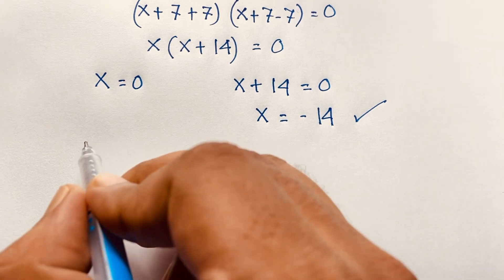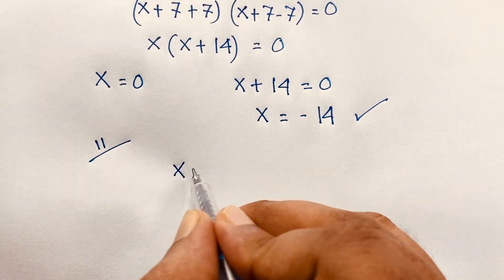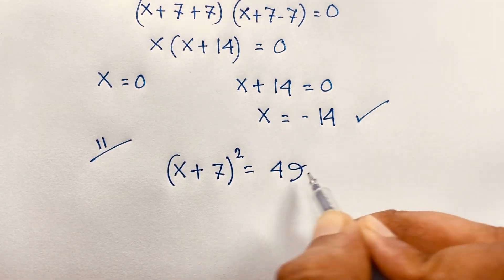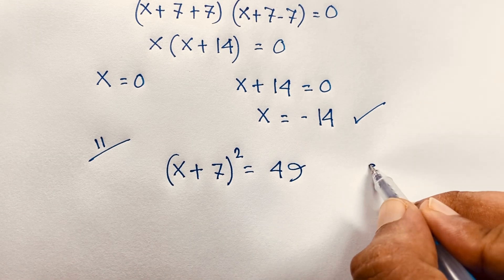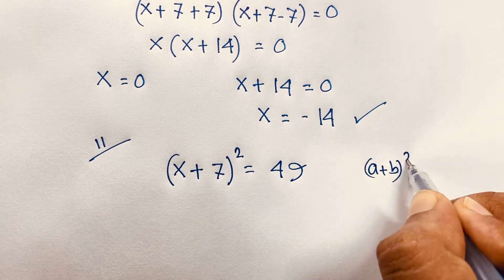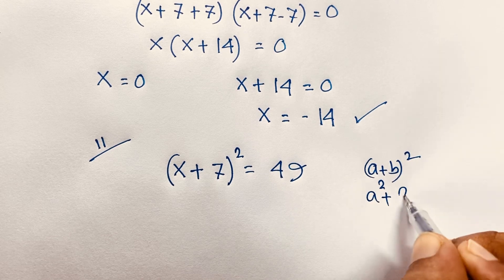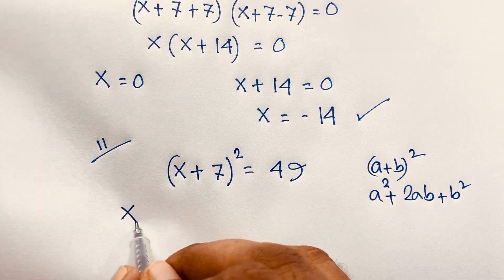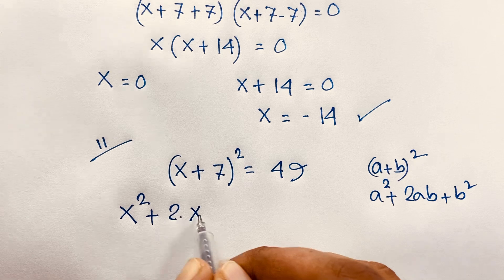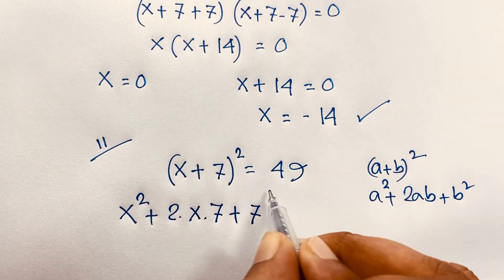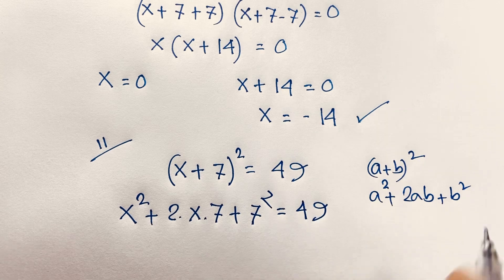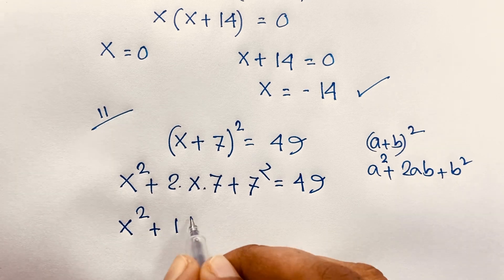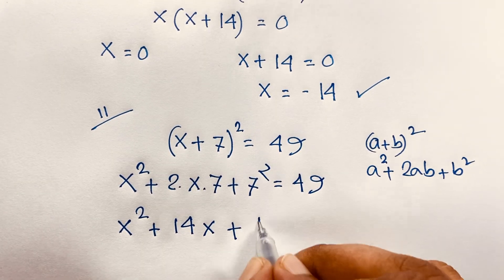Now I solve this question using the second method. (x + 7)² = 49. We know that (a + b)² = a² + 2ab + b². Applying this formula, it becomes x² + 2·x·7 + 7² = 49, which is x² + 14x + 49 = 49.